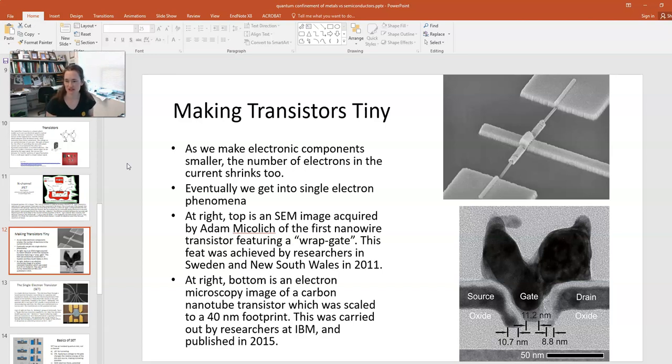So these are some images of tiny transistors that folks and research groups across the world have made. At top right you have a scanning electron microscope image of the first wrap gate, first nanowire transistor, featuring a wrap gate, and this was done in 2011 in Sweden and New South Wales.